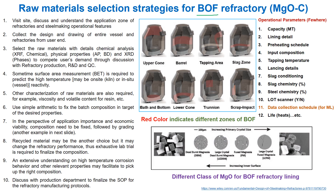What would be the strategies to select the raw materials for different zones? One can visit the site, discuss, and understand the application zones of refractories and steel-making operational features. There are eight zones that demand different grades of magnesia carbon refractories, and it depends on operational features like capacity, lining detail, preheating schedule, input composition, tapping temperature, lancing detail, slab conditioning, slab chemistry, steel chemistry, leftover thickness, scanner facility, and data collection schedule for machine learning life hits.